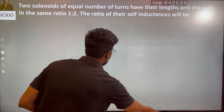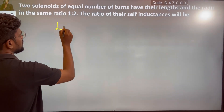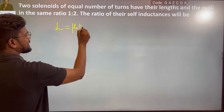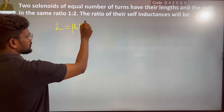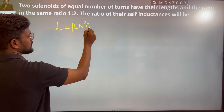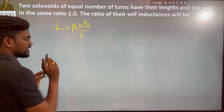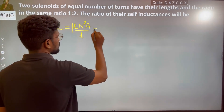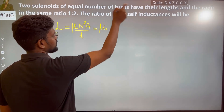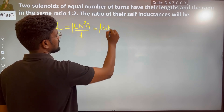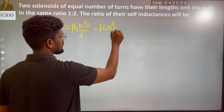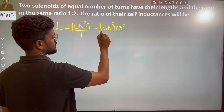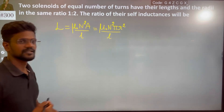Self-inductance formula — we know that L is equal to mu naught n squared, A upon L. This can also be written as mu naught n squared, pi r squared upon L.